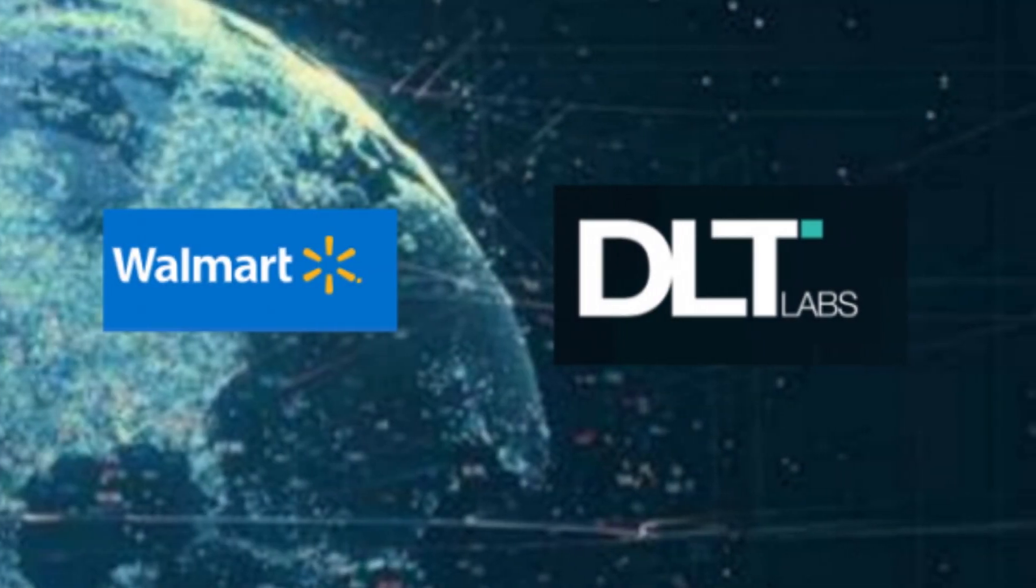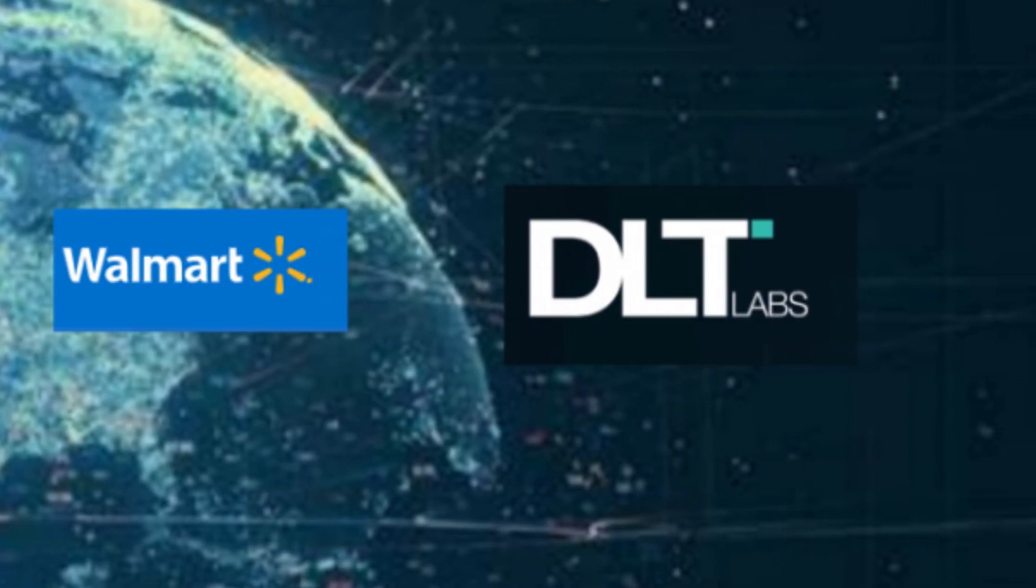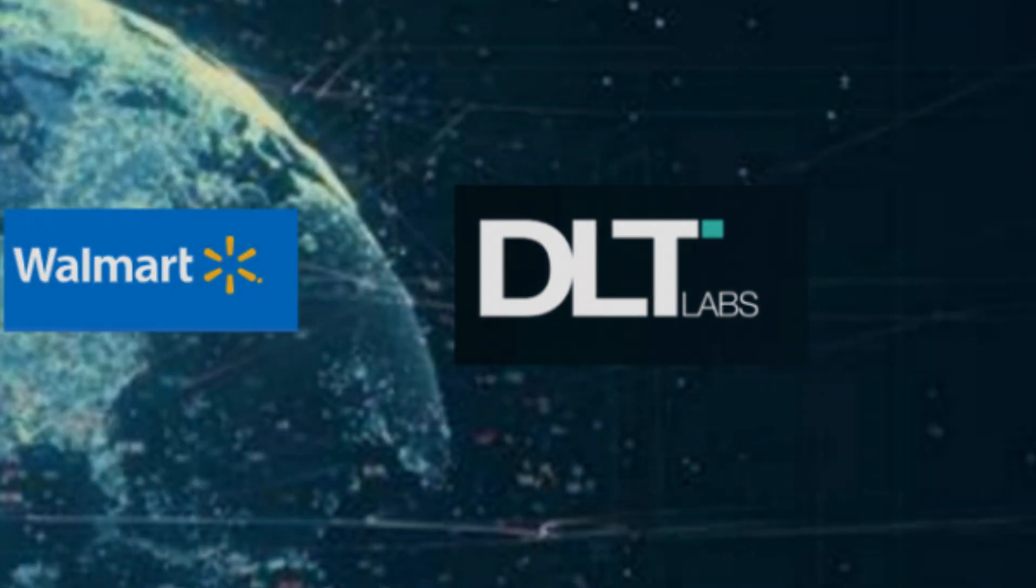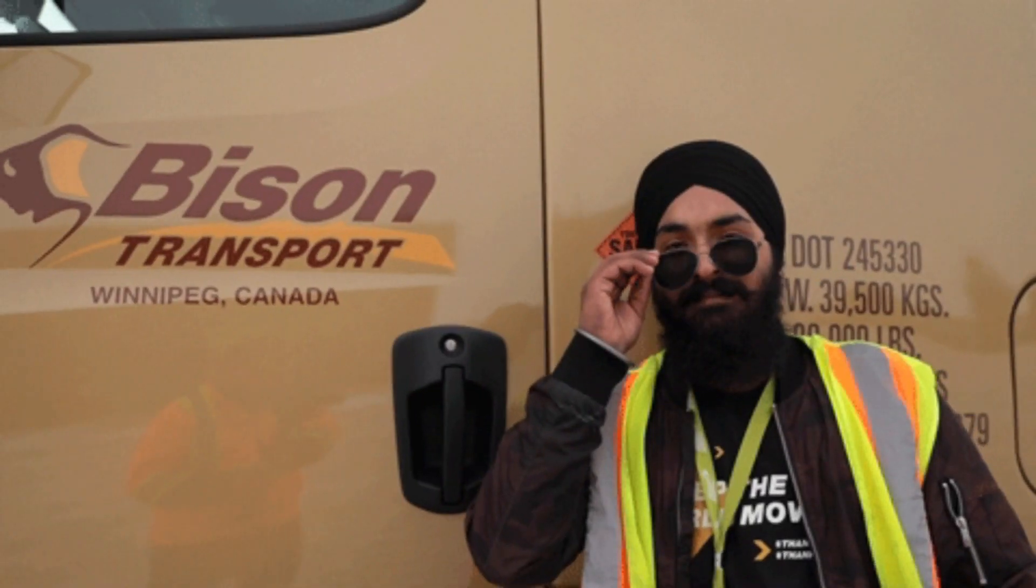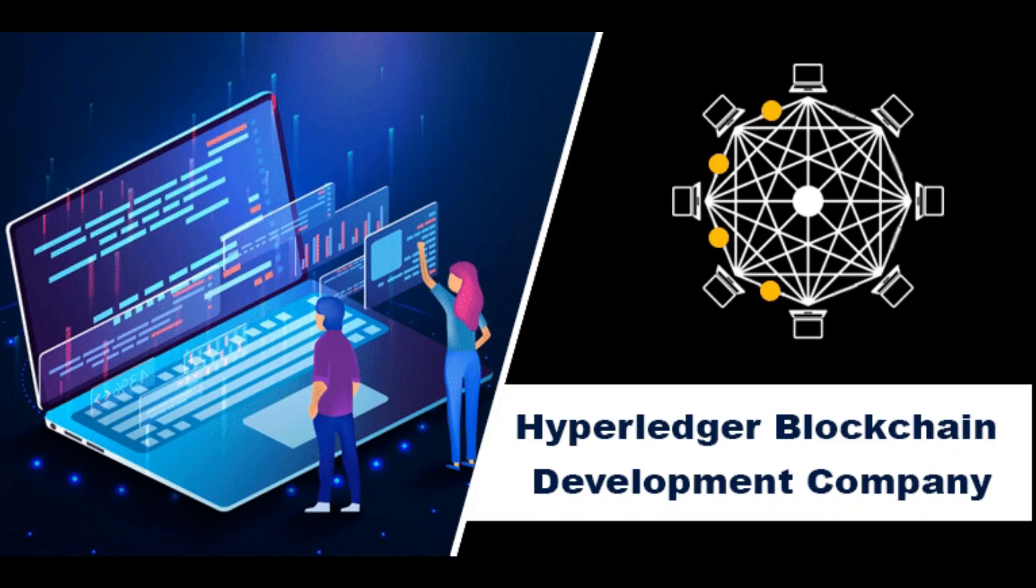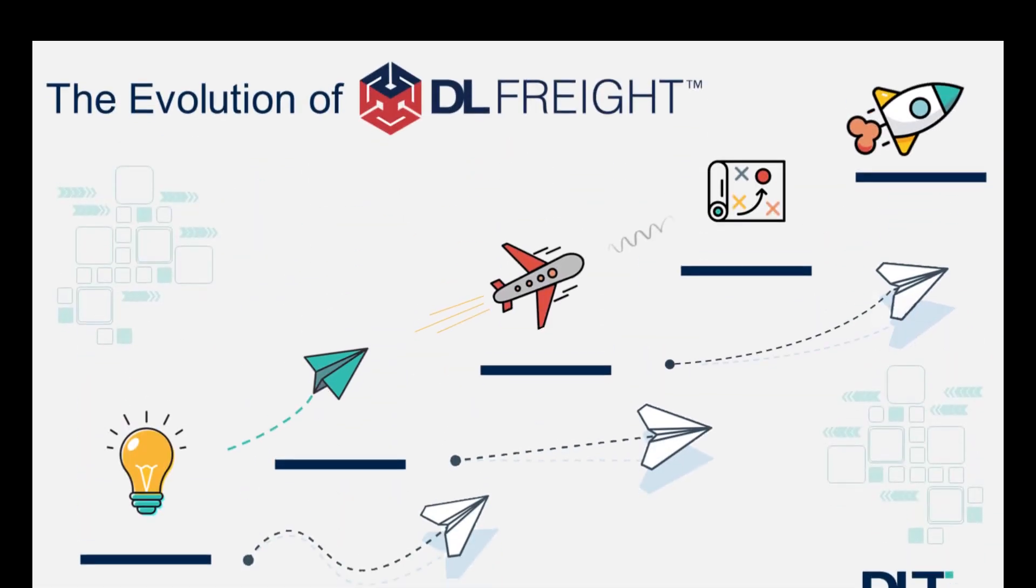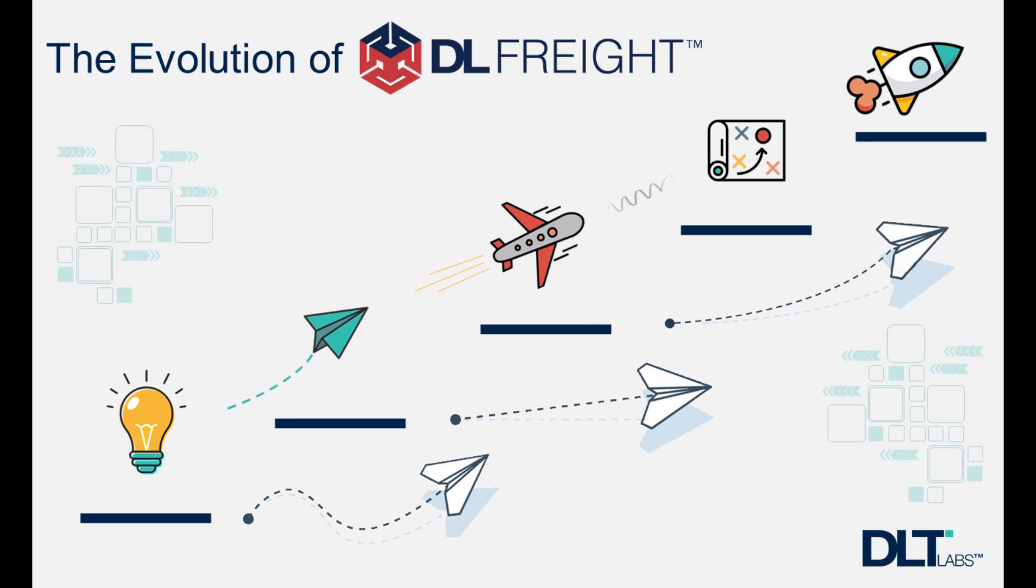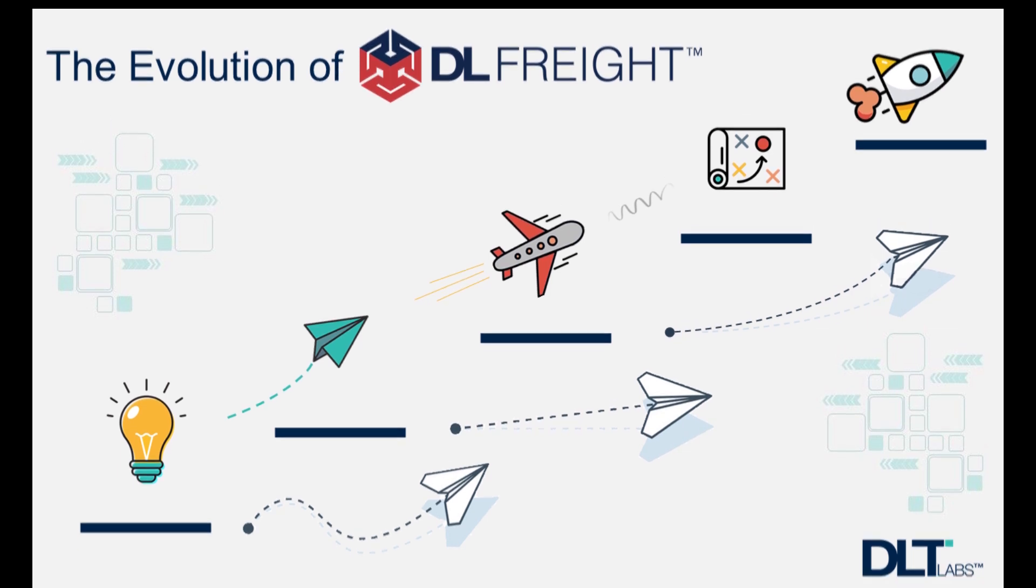To help with the effort, Walmart Canada brought in DLT Labs, a company with expertise in data management. It also required one of its carriers, Bison Transport, to join the team charged with developing a blockchain pilot. Walmart decided to use a private network built on Hyperledger Fabric, an open-source blockchain platform. The name of the network was decided as DL Freight. The pilot went live in January 2019 and was deemed a success.